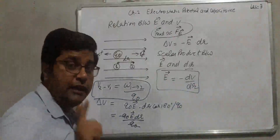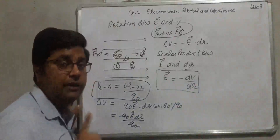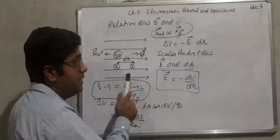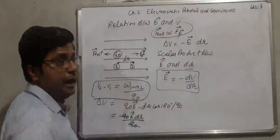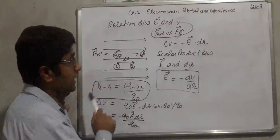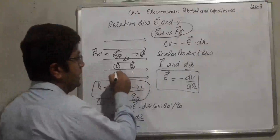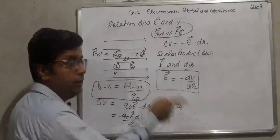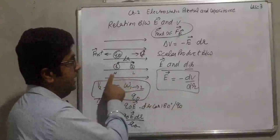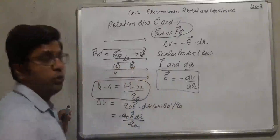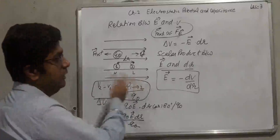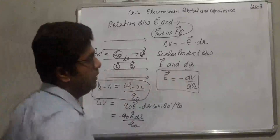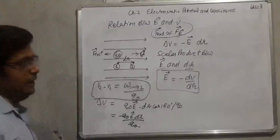Remember that potential decreases in the direction of the electric field. So point 2 (in the direction of the field) has lower potential and point 1 has higher potential. We are taking the charge from point 1 (lower potential) to point 2 (higher potential), so work is being done. Work is done moving from lower to higher potential. The standard formula is E = −dV/dr.